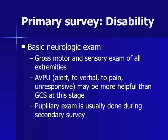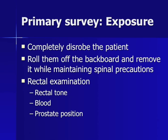Pupillary examination may be performed at this point or during the secondary survey. After Disability comes Exposure, which refers to completely disrobing the patient. The patient should be rolled off the backboard, which should be removed while the patient is maintained under spinal precautions. Rectal examination and examination of the entire spine should be performed, and visual inspection of the axillae and perineum should also occur.